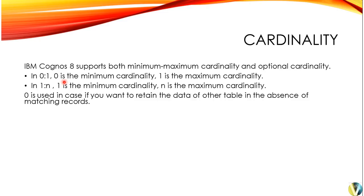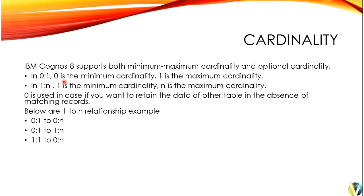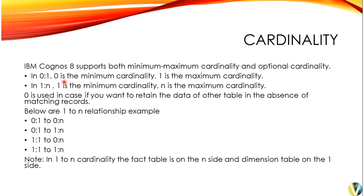What do you mean by optional cardinality? If you want to perform an outer join — left outer or full outer — you use a 0. Zero is used when you want to retain data from the other table in the case of non-matching records or the absence of a foreign key. The relationship types include: 0 to 1, 0 to n, 1 to 0..1, 1 to n, 1 to 1, and 0 to n or 1 to n combinations.